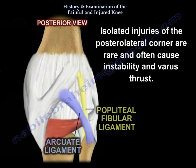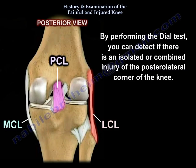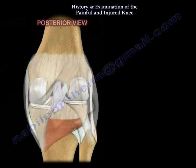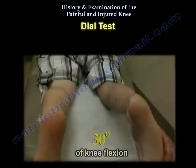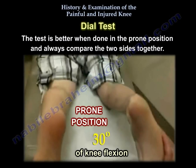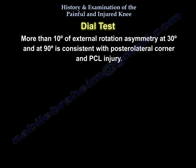Isolated injuries of the posterolateral corner are usually rare and often cause instability and varus thrust. By performing the dial test, you can detect if there is an isolated or combined injury of the posterolateral corner of the knee. In isolated posterolateral corner injury, the dial test will be positive at 30 degrees of flexion. It is best if the test is done prone, and always compare the two sides together. Flexion at 90 degrees tests the posterior cruciate ligament. More than 10 degrees of external rotation asymmetry at 30 and 90 degrees is consistent with posterolateral corner and PCL injury.